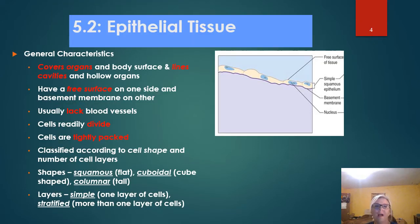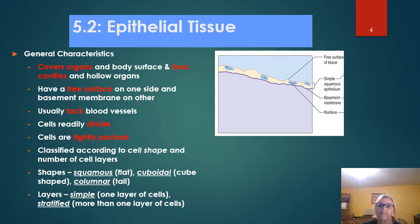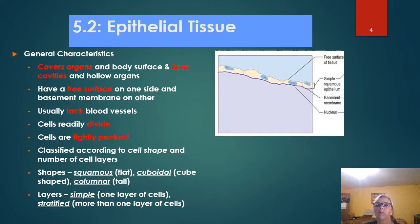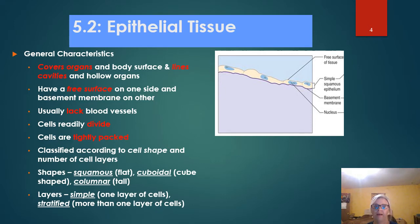Epithelial tissues are found all throughout the body. They cover the body surface and organs and line different cavities — these are basically what we think of when we talk about things like our skin cells. Since they don't have any blood vessels, nutrients have to diffuse up to the epithelium from the tissues below. Cells readily divide, which helps healing occur rapidly. Skin cells found in the stomach and intestines are continually being damaged and replaced. Other epithelial tissue functions include secretion, absorption, and protection. They're tightly packed and do not have blood vessels.